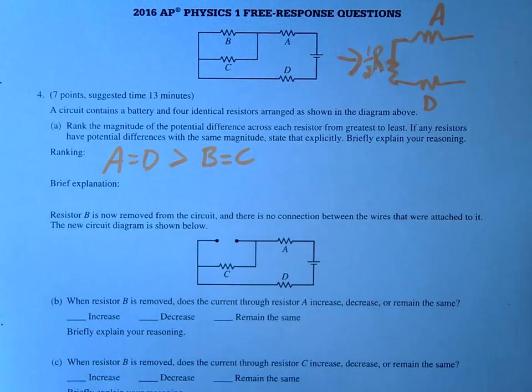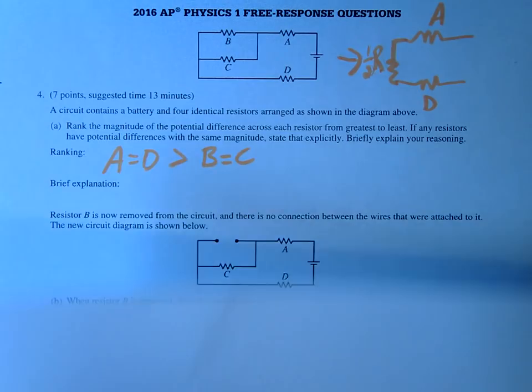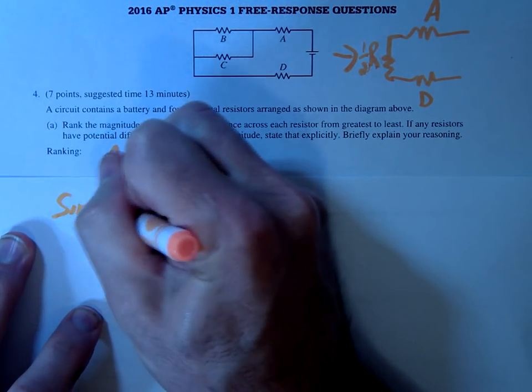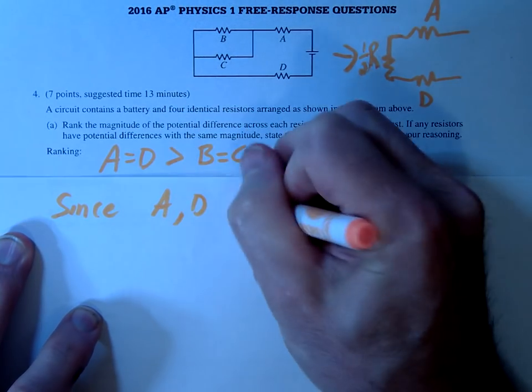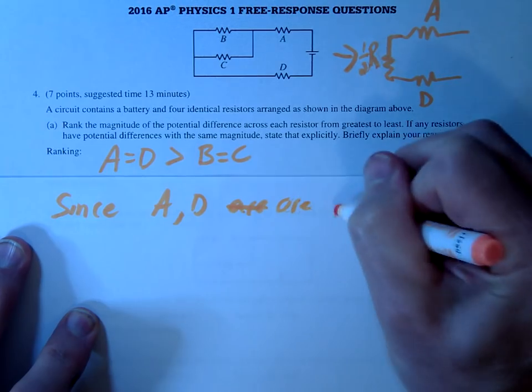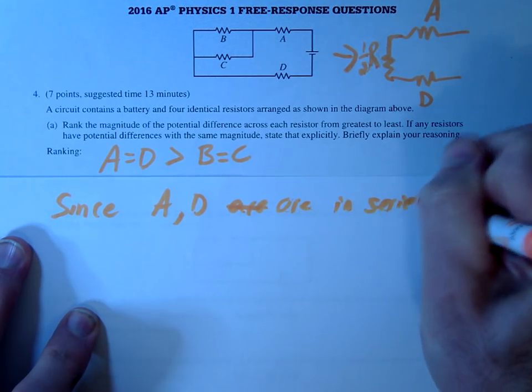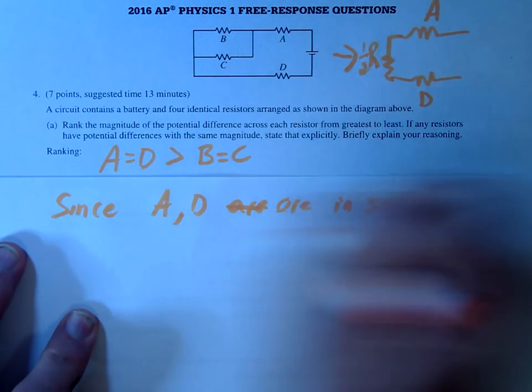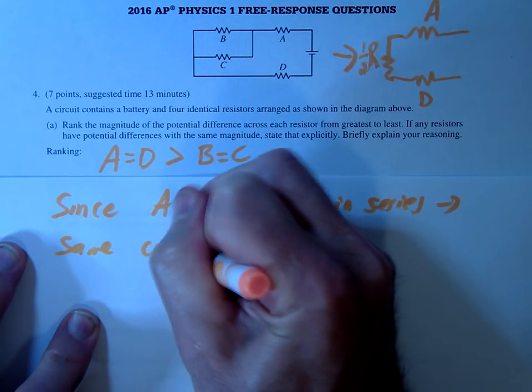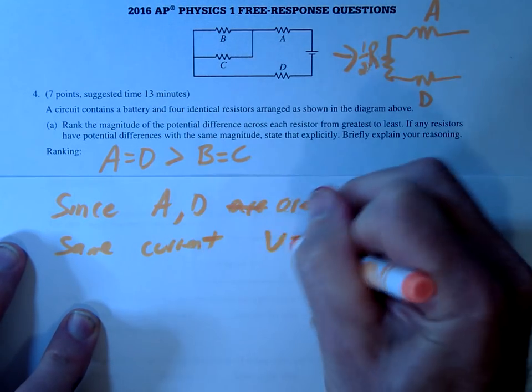Okay, and then you kind of explain what I just explained. How do we do that with words? Well, you could say something like, since A and D are in series, and therefore they have the same current.